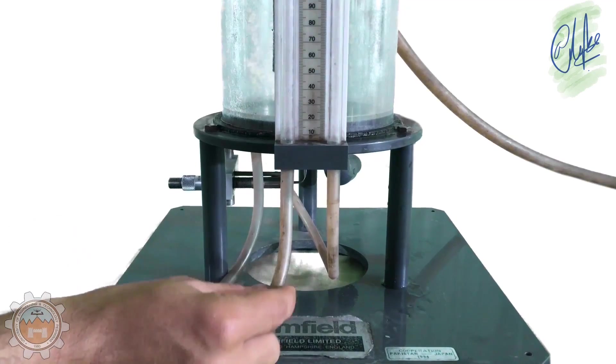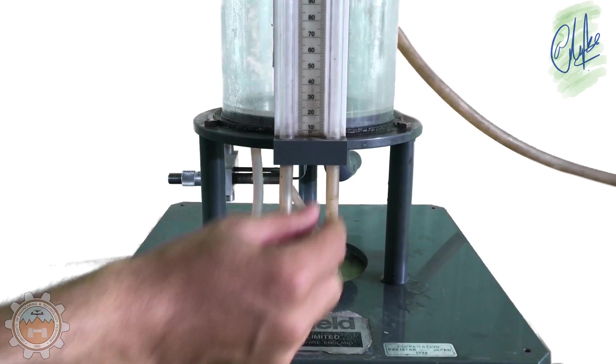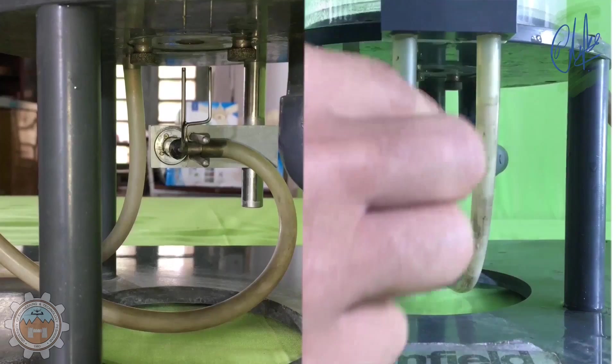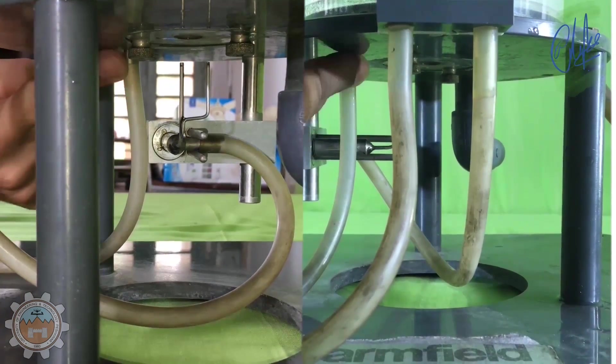This manometer connected to the piezometer shows us the static pressure head while this manometer connected to the pitot tube shows us the velocity head. We can have a better look of these two pipes from this angle.